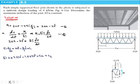Now we determine the values of C1 and C2 using boundary conditions. The first boundary condition is: at x equals 0, v equals 0. Substituting these values into the equation, we get directly that C2 equals 0.